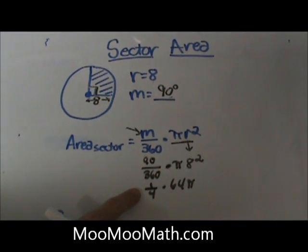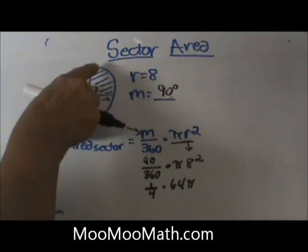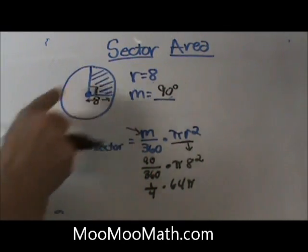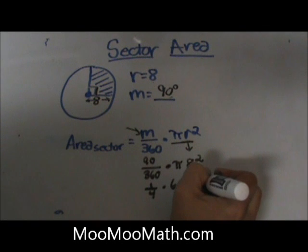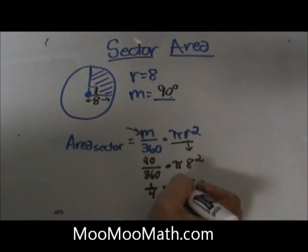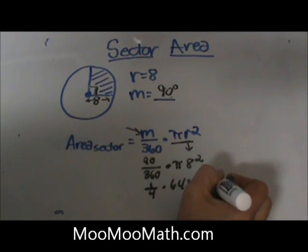Now we're going to take one-fourth, which is the section that is shaded in, times 64. In other words we can take the area of the circle and divide it by four, which is the same as multiplying by one-fourth, and we get 16π.